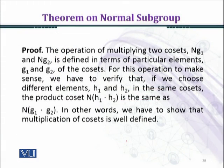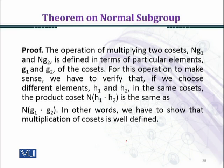Now we prove the theorem. To prove this theorem, we want to show that G over N is a group. First, we have to show that the binary operation is well defined. Then we shall prove the axioms of the group — that is, the associative property, existence of identity element, and existence of inverse.